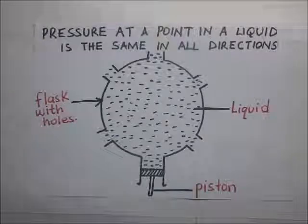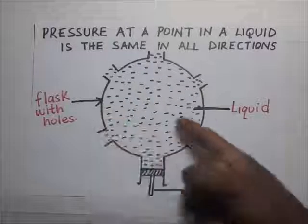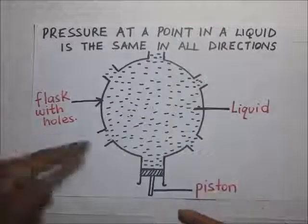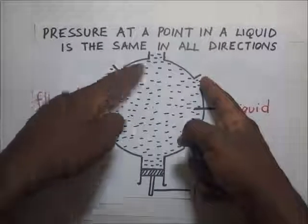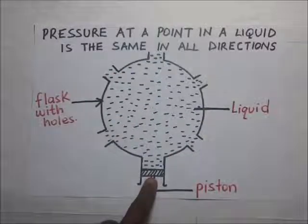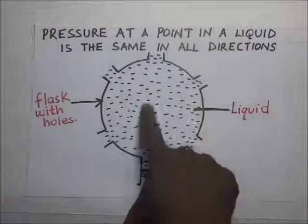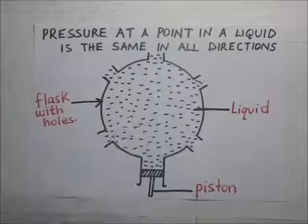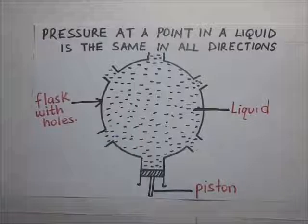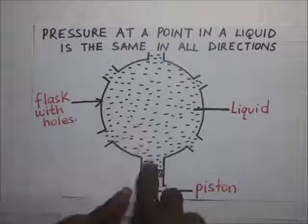To demonstrate this, we have a flask right here. This flask has got holes around it. We have a piston here, and here is our liquid — this liquid could be water or it could be oil.